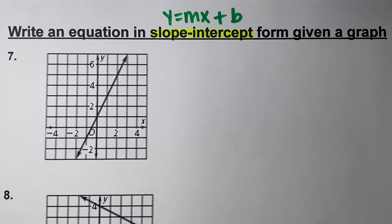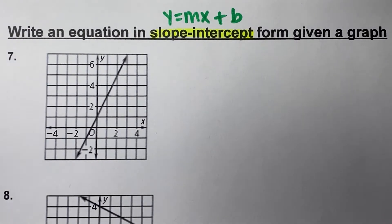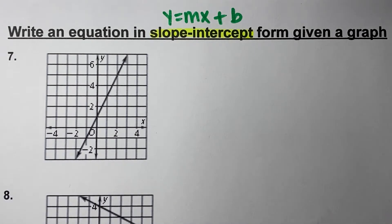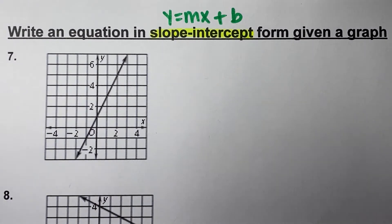In this video, you're going to practice writing an equation in slope-intercept form given a graph. We want to remember that y equals mx plus b is our slope-intercept form. In order to write this in slope-intercept form from a graph, we need to identify the slope and the y-intercept, and then we can write our equation.